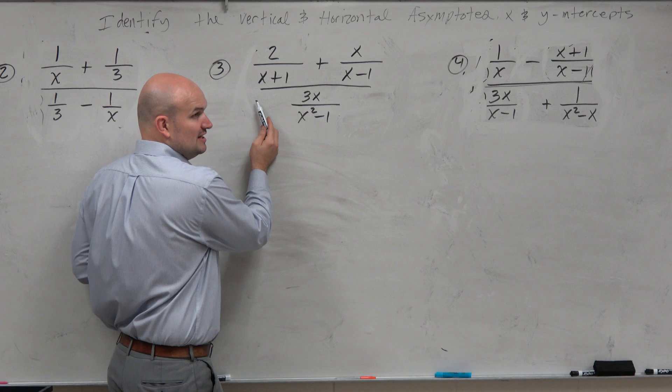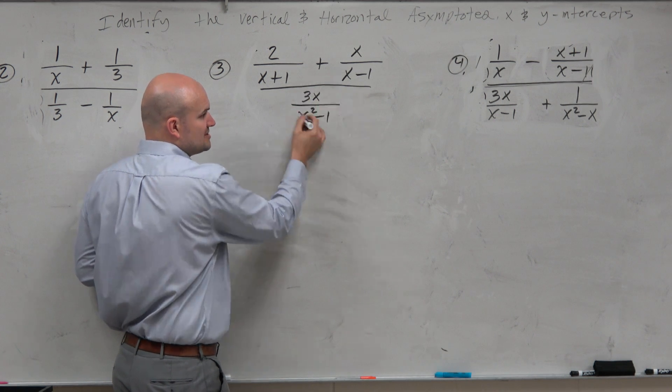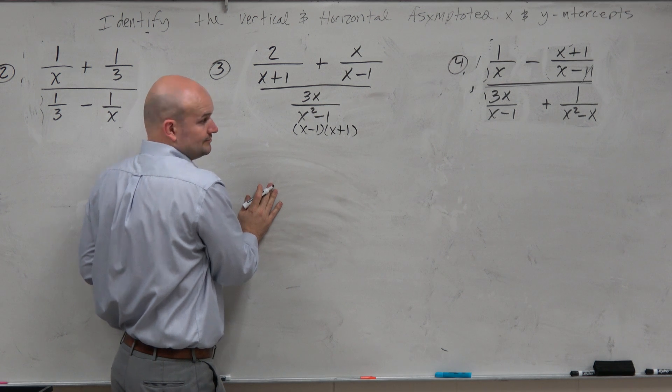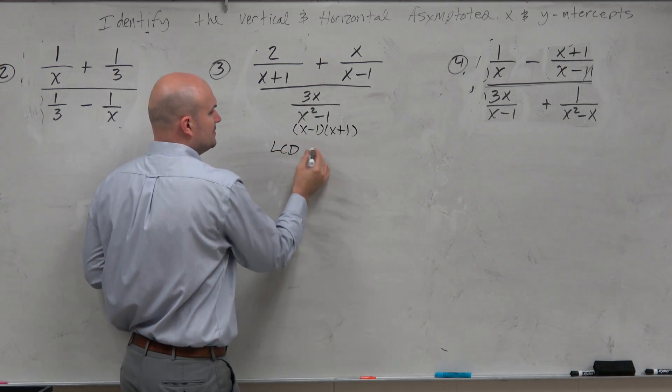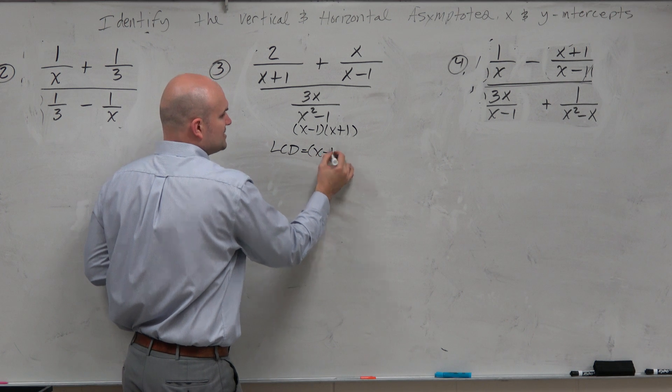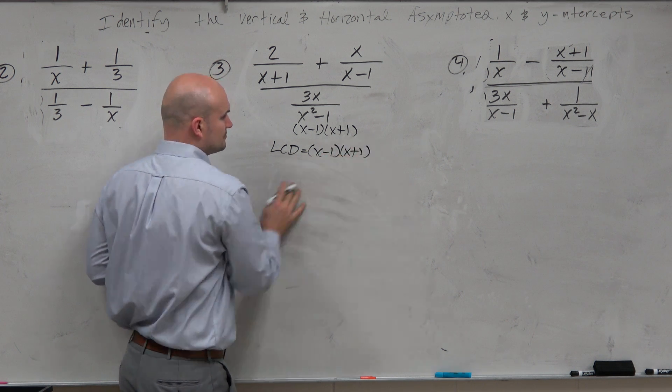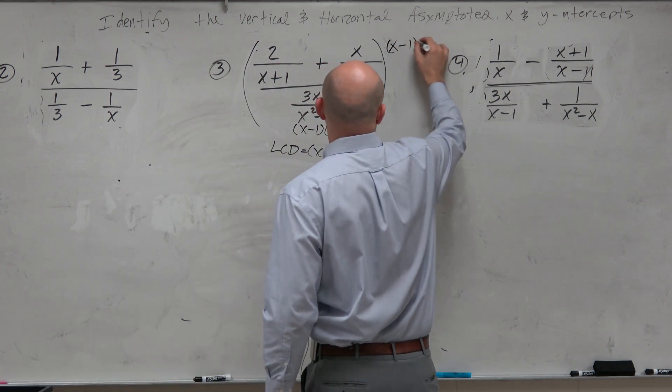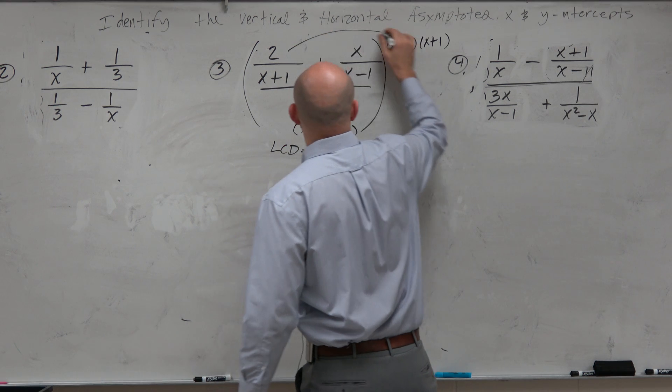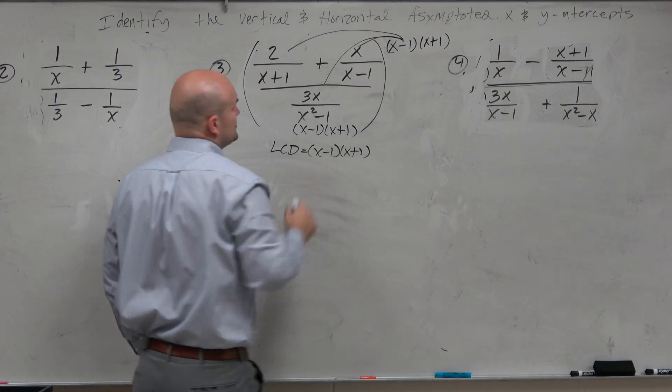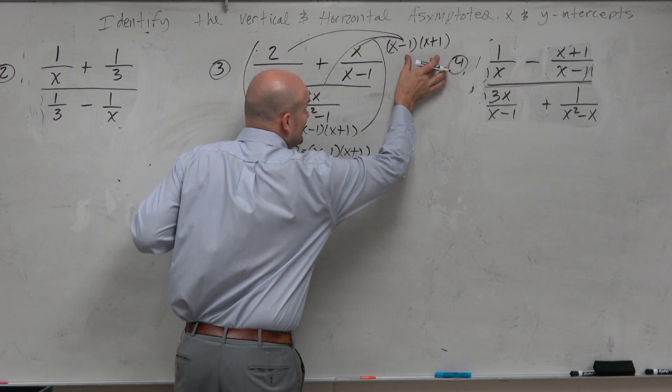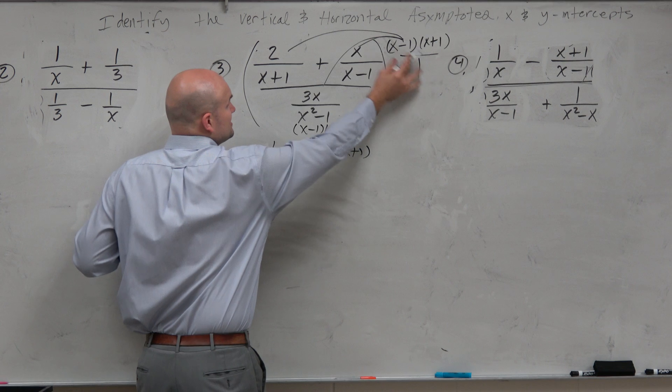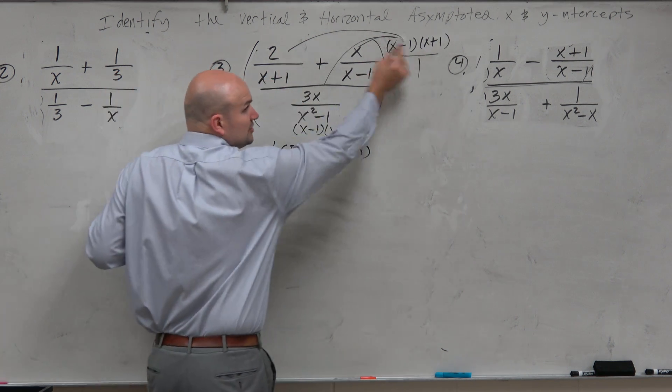So if you guys look at this, we can identify the LCD as really just the product of these two, because this can be factored down into x minus 1, x plus 1. So I can identify the LCD as being x minus 1 times x plus 1. So what we're going to do is I'm going to multiply everything times x minus 1 times x plus 1. Now, I'm not going to show my work of actually rewriting this as the product of each one, but I'm going to talk my way through it. First, if I multiply this times that, remember, that's in the numerator. So if I multiply this times that, you can see the x plus 1's will divide out.